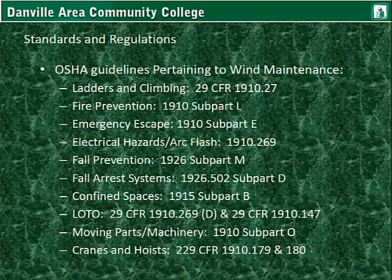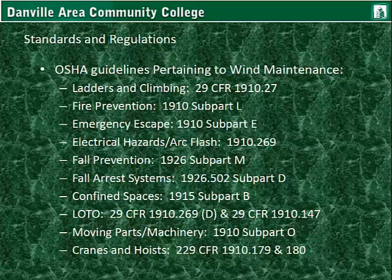Standards and regulations. OSHA guidelines pertaining to wind maintenance include: ladders and climbing — 29 CFR 1910.27; fire prevention — OSHA 1910 Subpart L; emergency escape — 1910 Subpart E; electrical hazards and arc flash — 1910.269; fall prevention — 1926 Subpart M; fall arrest systems — 1926.502 Subpart D; confined spaces — 1915 Subpart B, examples being within a wind turbine nacelle or within a blade; lockout-tagout procedures — 29 CFR 1910.269 Subpart D and 29 CFR 1910.147; moving parts and machinery safety — 1910 Subpart O; cranes and hoists — 29 CFR 1910.179 and 1910.180.